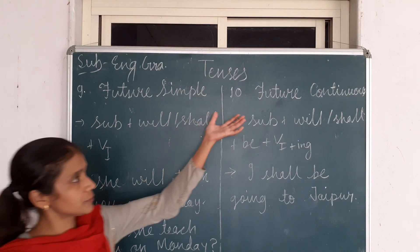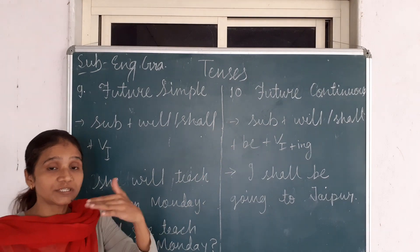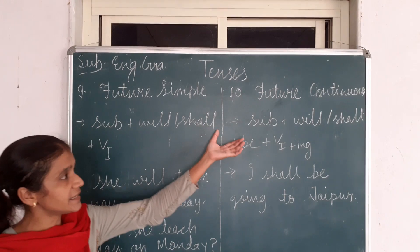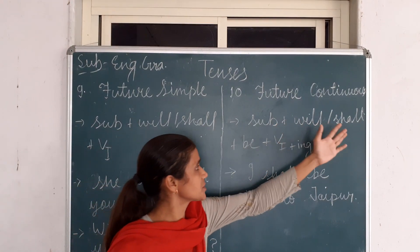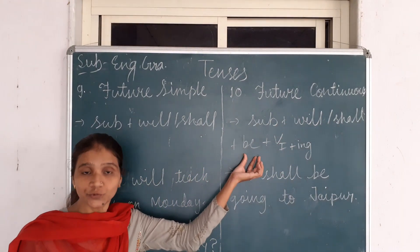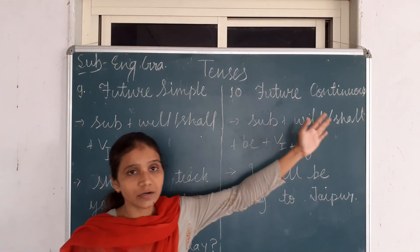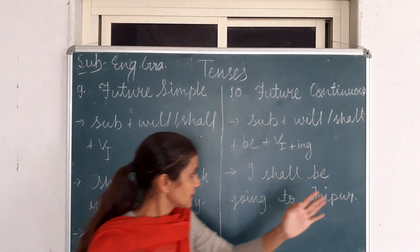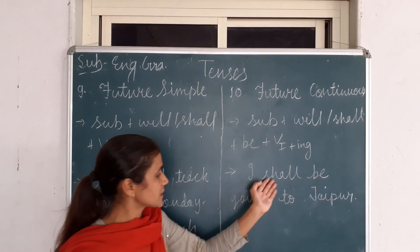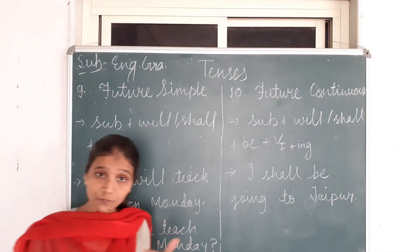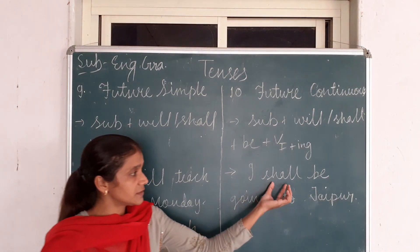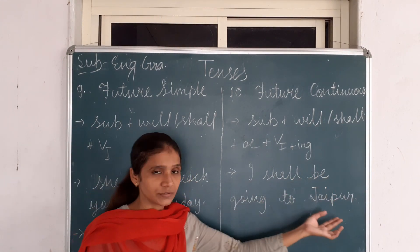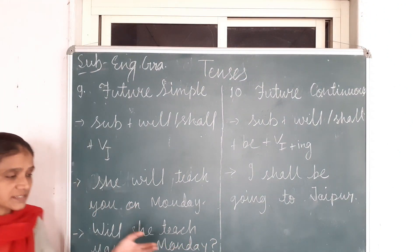Now we will discuss about Future Continuous Tense — when actions will not be completed in the future. Sentence structure: Subject + will/shall + be + first form of the verb with ING + Object. Example: 'I shall be going to Jaipur.' Negative: after will or shall, we add 'not.' 'I shall not be going to Jaipur.'